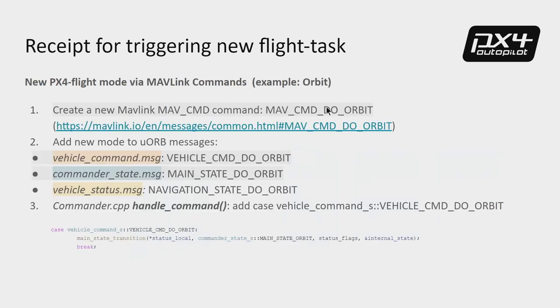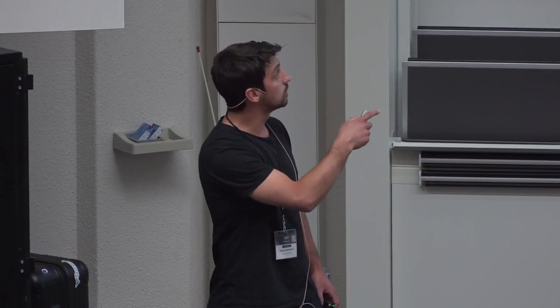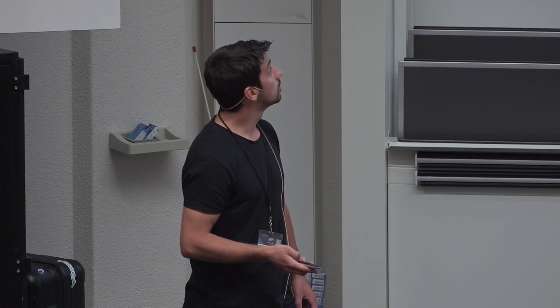The second method to trigger a new flight task is through MAVLink commands. In principle you wouldn't have to change anything in the firmware, but right now there are still about seven steps required where you have to manually modify things in the commander. These steps are listed in the presentation but are somewhat tedious, so you can follow those instructions when needed.